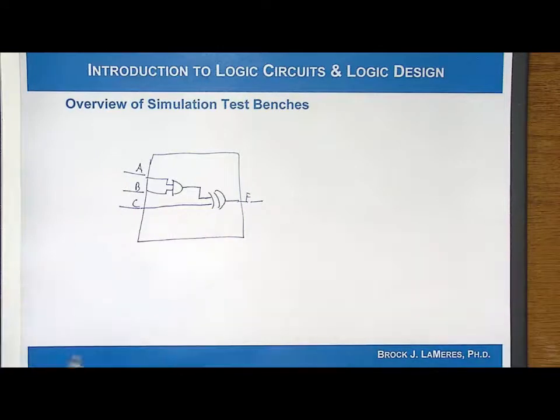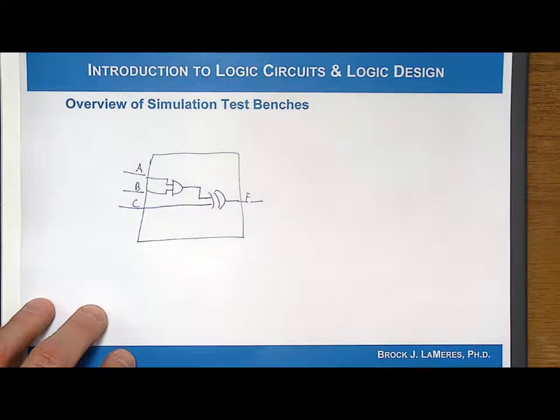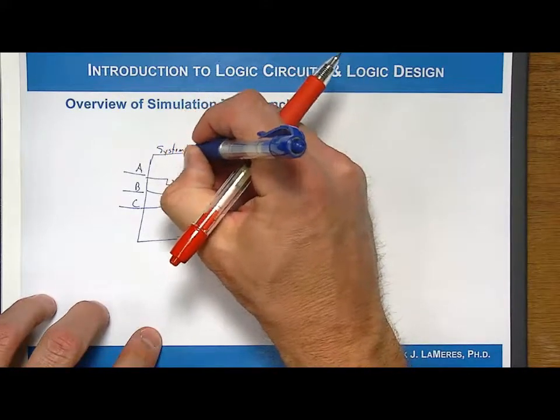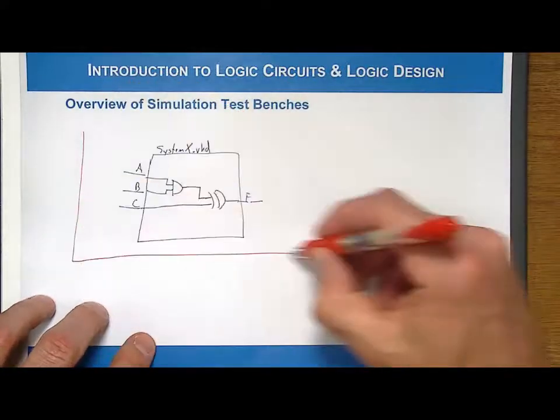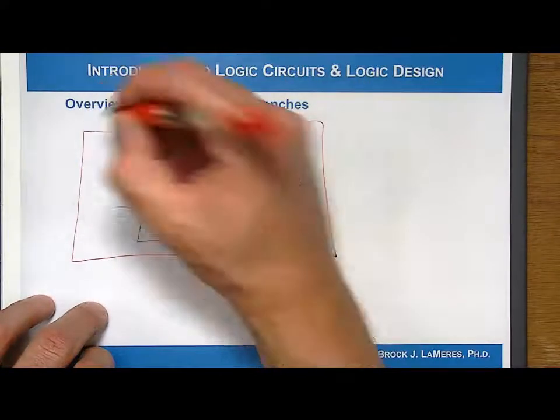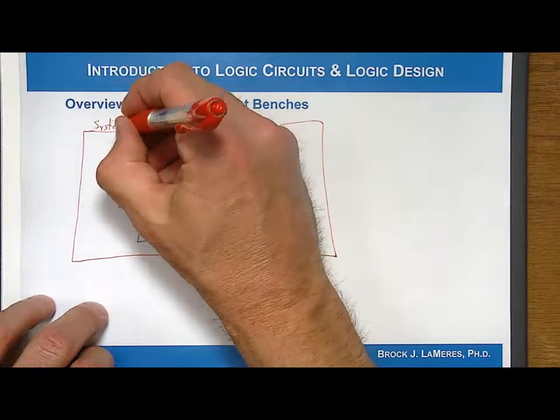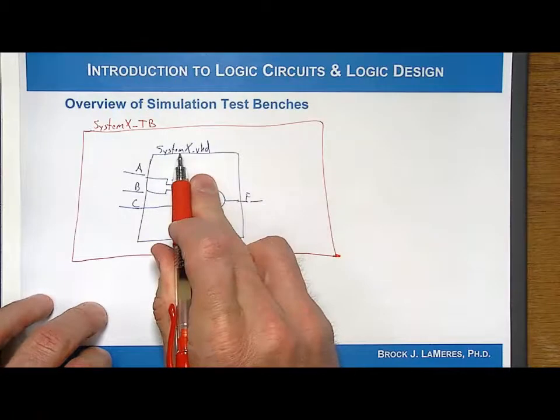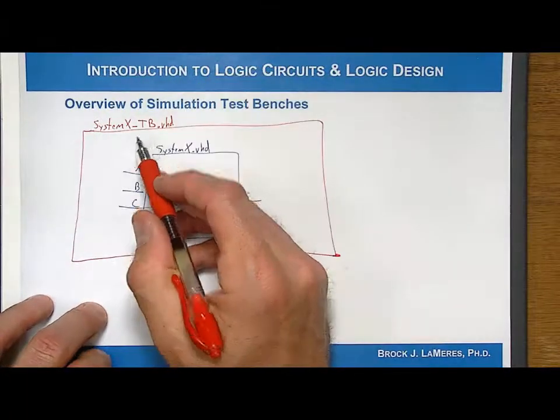So the way that you do that is you use what's called a test bench. Let's say, let's just call this SystemX. And what I'm going to do is I'm going to create a test bench, which is actually another VHDL file. And just for consistency, what I do is I always name it something like SystemX underscore test bench, that relates it to the system I'm testing, and then also indicates that it's a test bench.